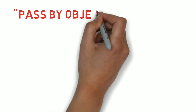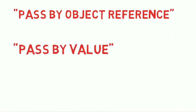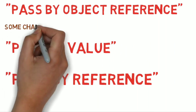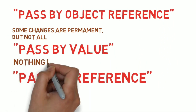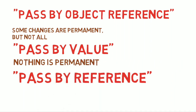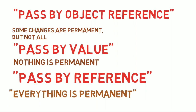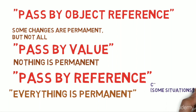What we actually learned is called pass by object reference — this is how arguments are passed to functions in Python as well as in Java. Pass by value and pass by reference are the other paradigms. Pass by object reference means some changes are permanent but not all. In pass by value, you pass in the value inside the variable to the function, so nothing done to that value reflects in the calling code — nothing is permanent. In pass by reference, everything is permanent because you pass in the memory location of the variable, so anything at that location gets changed. Pass by reference is used in C++ in some situations.